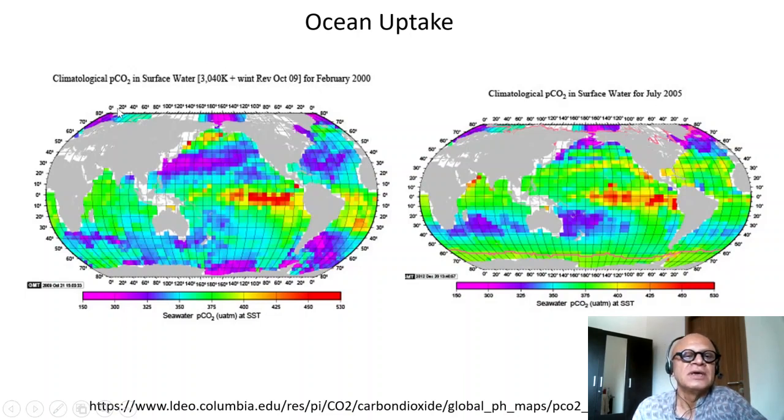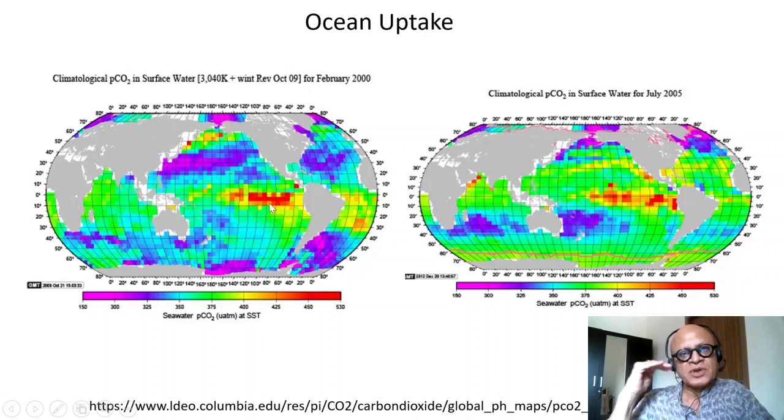This is showing the partial pressure of CO2 in the surface. You can see that the partial pressure is high here in terms of micro atmospheres at the given SSTs in February or in July. So you can see that there is high pressure here, and depending on the partial pressure of CO2 in the atmosphere, flux could be out.